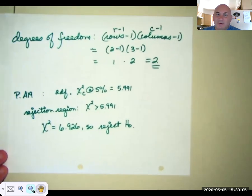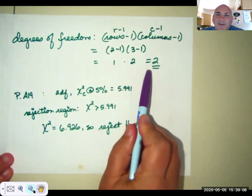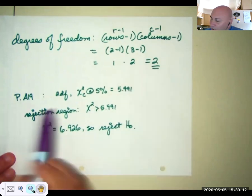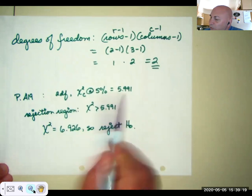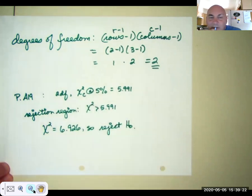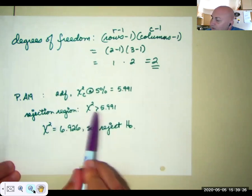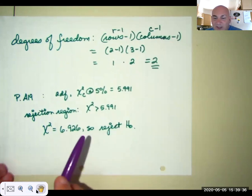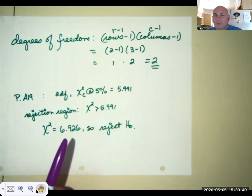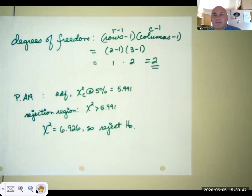With two degrees of freedom, going to the chi-square table on page A19, at the 5% level the critical value is 5.991. Our rejection region is anything to the right of 5.991. Our chi-square statistic was 6.926, which falls in the rejection region, so we reject the null hypothesis. This means the two variables — grades and time spent in extracurricular activities — are not independent; there is a relationship.